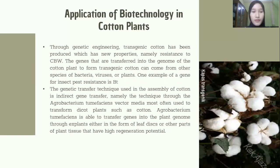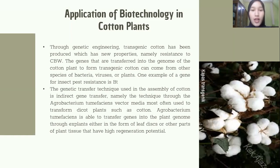The next application of biotechnology is in cotton plants. Through genetic engineering, transgenic cotton has been produced which has new properties, namely resistance to CBW. The genes transferred into the genome of the cotton plant to form transgenic cotton can come from other species of bacteria, viruses, or plants. One example for insect-based resistance is Bt, or Bacillus thuringiensis. The genetic transfer technique used in cotton assembly is indirect gene transfer, through the Agrobacterium tumefaciens vector, which is most often used to transform dicot plants such as cotton.